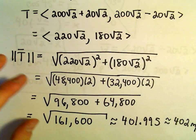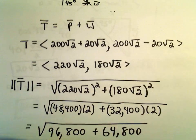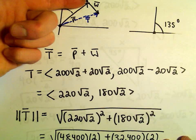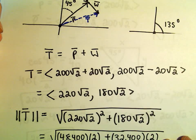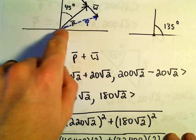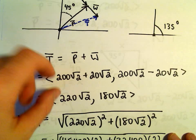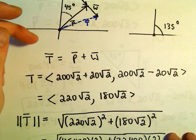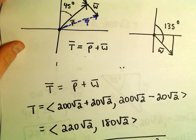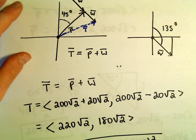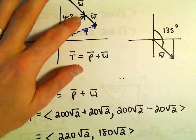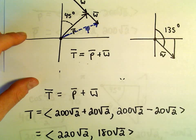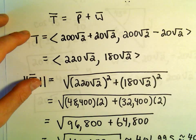Even though the plane was officially only going 400 miles an hour, that makes sense — the wind is kind of pushing it a little bit, giving it a little extra force so it's moving a little further to the right intuitively. You can see that in the new vector T. Certainly the plane should be traveling a little faster than 400 miles per hour due to the wind speed. So that's all we're doing: be careful with your bearings, find components for each of the vectors, add them together, and then find the magnitude at the very end.